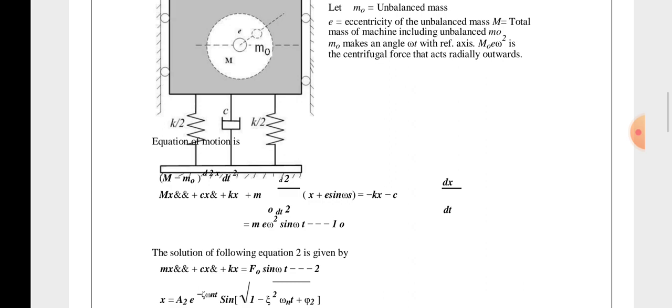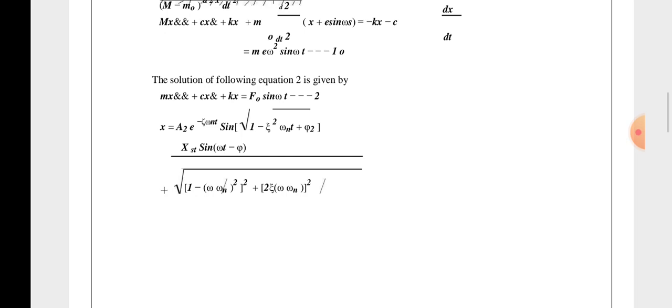What we got: m0 e ω² sin ωt, equation number 1. M x double dot plus c x dot plus k x equals F0 sin ωt. Again by simplifications, what we got this kind of equation.